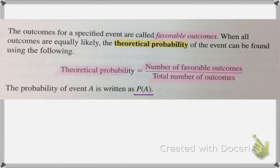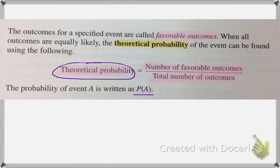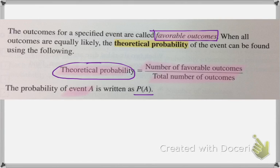So why do we bother finding the total number of outcomes? Because you need to know the total number of outcomes to find your theoretical probability. Theoretical probability is how likely a certain event is to occur. The outcomes where a specific event happens are called favorable outcomes. To find the theoretical probability, you take the number of favorable outcomes and divide it by the total number of outcomes. The way you write the probability of event A happening is P(A) — so it looks like a function.